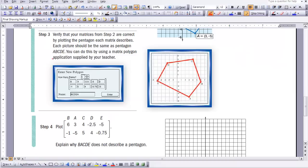We're going to skip step three of this activity as I haven't supplied you with the application for entering your polygon into your calculator. But what I would like you to do is now plot the Pentagon with the coordinates B, A, C, D, E listed below and then try and explain why it does not describe a Pentagon. Stop the video now and when you're finished plotting all those points go ahead and start the video again.